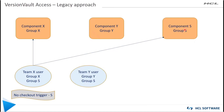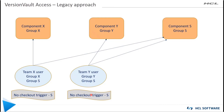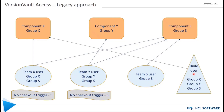Similarly, another user from Team Y who needs access on component Y and component S — we will add him to the respective groups and create a no-checkout trigger. There is also another user who needs access on component S, so we will add him to the same group. Finally, a build user who needs access on all three components, so we will add him to all three groups.